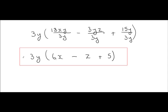So 3y by 6x, 3 by 6 is 18, y by x gives xy. 3y by minus z gives minus 3yz, and 3y by plus 5 is plus 15y.